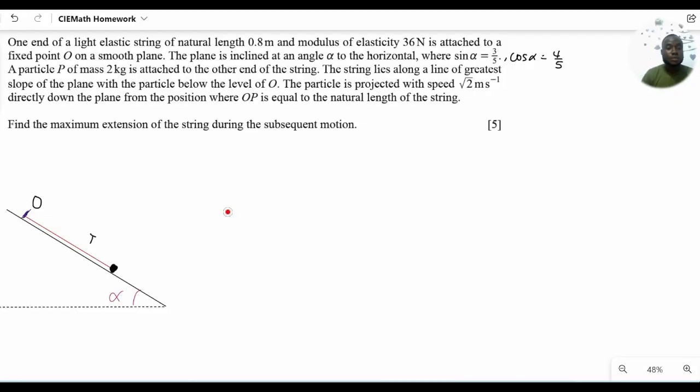For this second question, we have a particle P attached to a string hanging on a string that is placed on a smooth plane. So that helps us ignore friction. The natural length of the string is 0.8 meters. The modulus of elasticity is 36 Newtons.